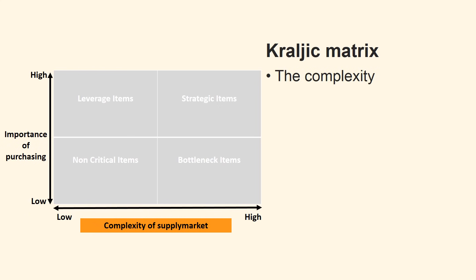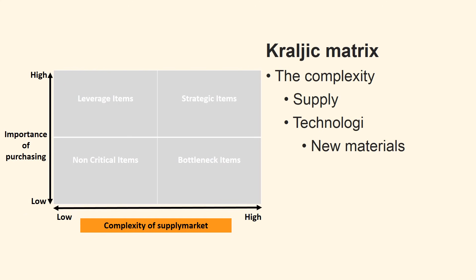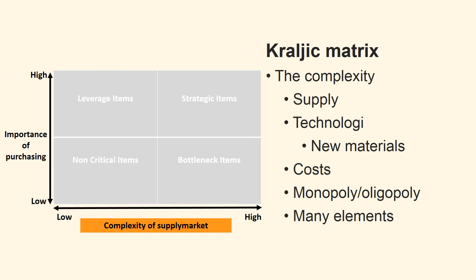First we review the complexity. By complexity we mean that supply can be scarce, that there are constantly new technologies coming on the market that can substitute existing technologies — for example, new plastic alloys which could replace metals in production. Also relevant are costs, how difficult or expensive it is to start new production of the item. If the market is a monopoly or oligopoly and access barriers are high for new entrants, it may be difficult to obtain the products in demand in the short as well as in the long term. Complexity of the supplier market contains many different elements that must be considered when the matrix is used.